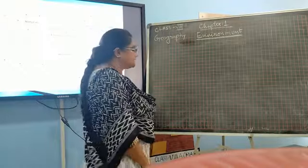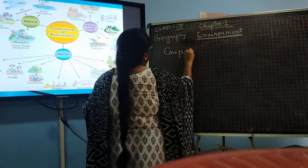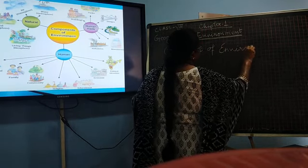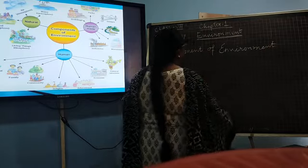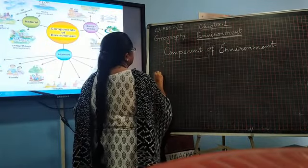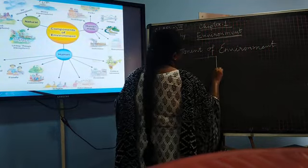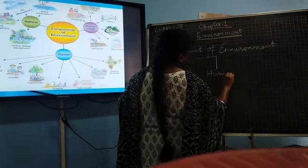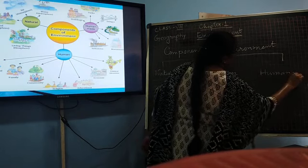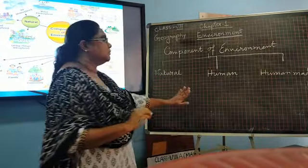The next question is: what are the components of environment? There are three components of environment: number one, natural; number two, human; and number three, human-made.